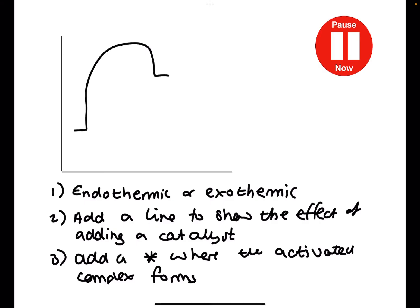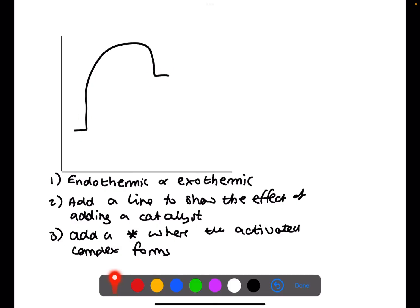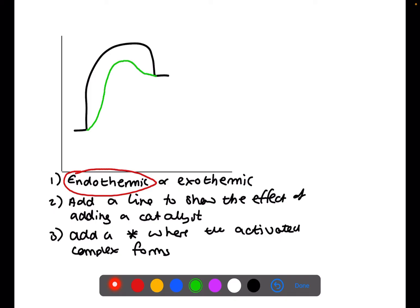Pause the video now and try this question. For this question, is the reaction endo or exothermic? Looking at reactants and products, the products have a greater energy than the reactants, so products minus reactants gives a positive value — therefore this is an endothermic reaction. We also need to add a line to show the effect of adding a catalyst: a catalyst lowers the activation energy, so the height of the hill will be smaller. The activated complex always forms at the top of the activation energy hill, so place a star there.